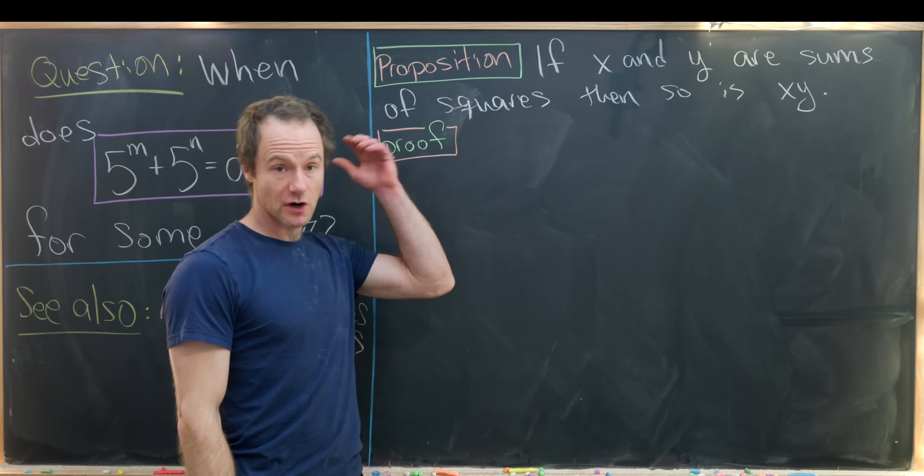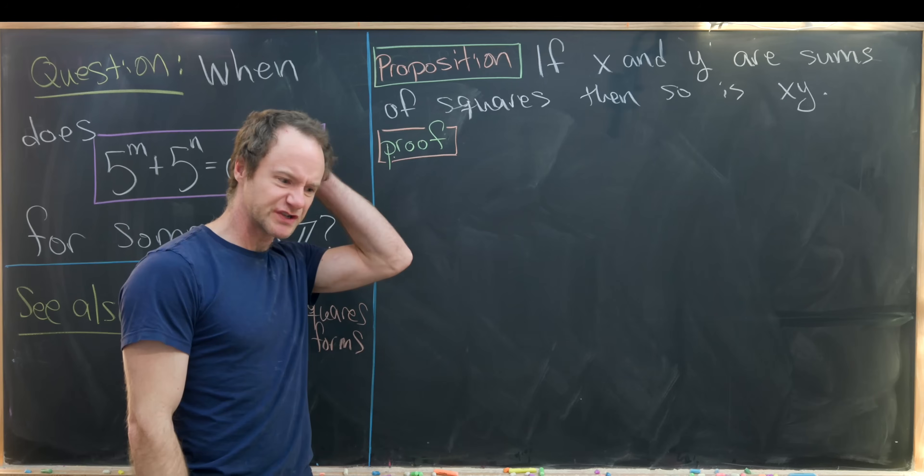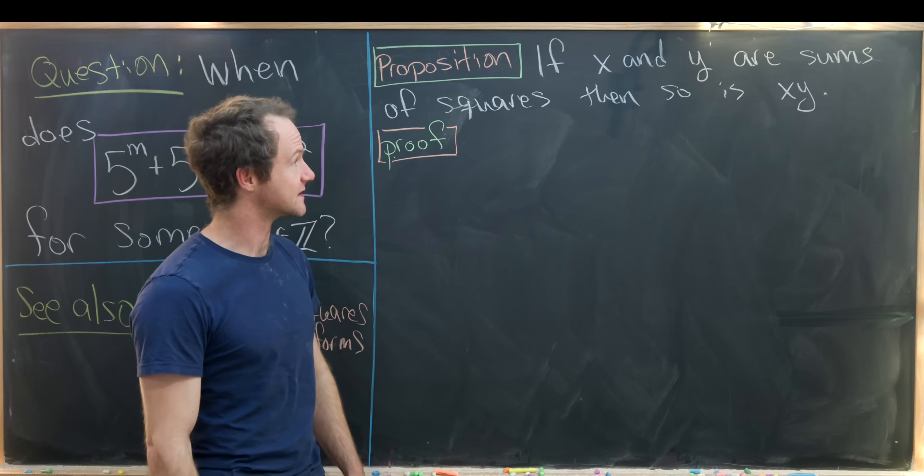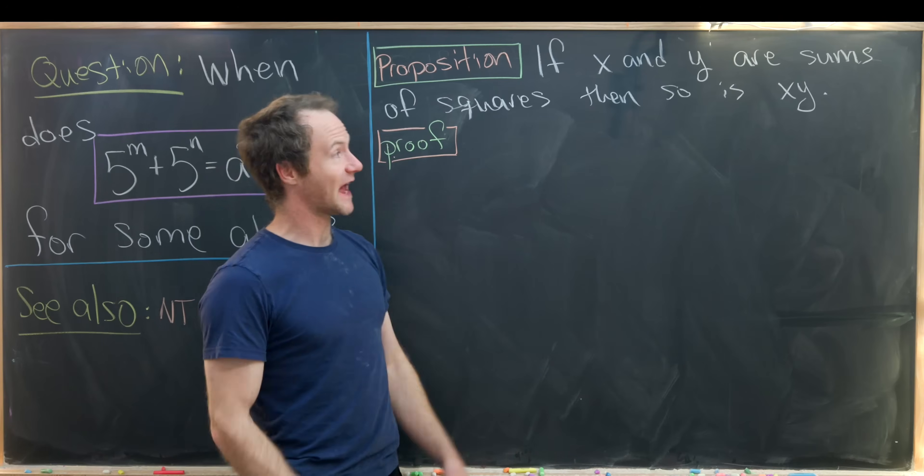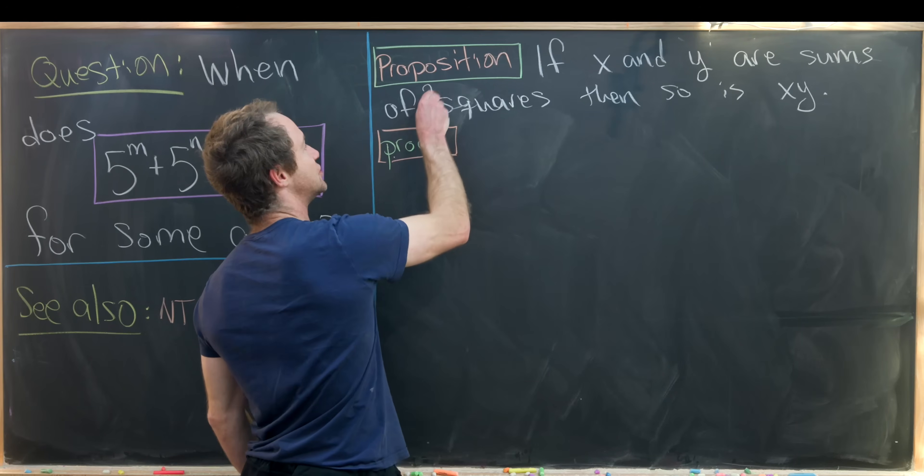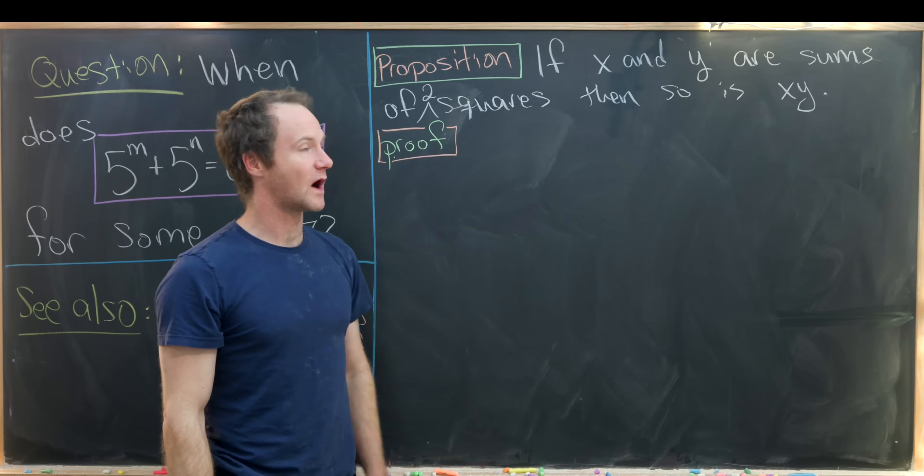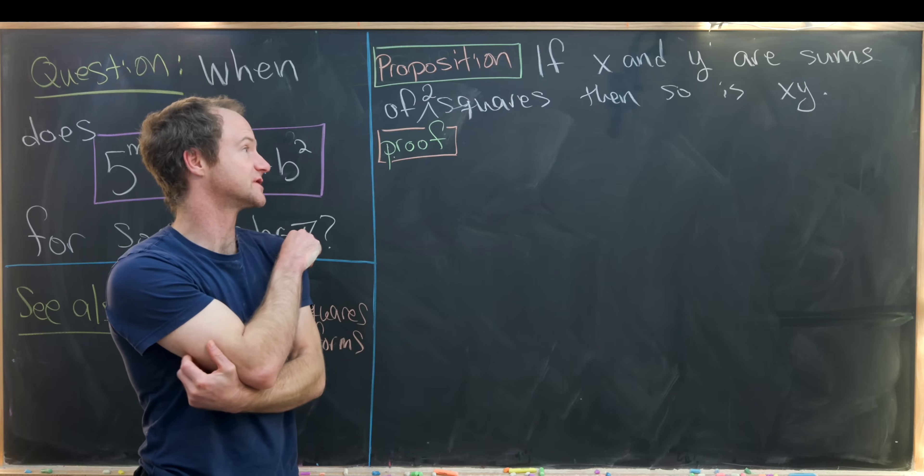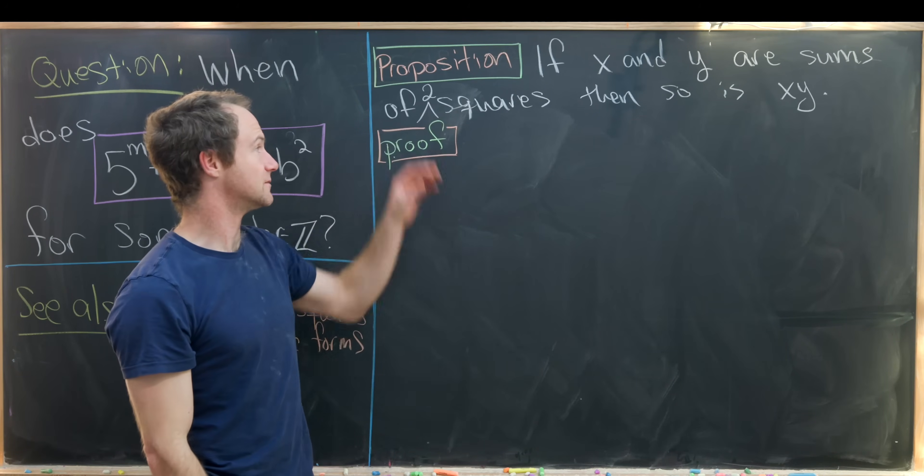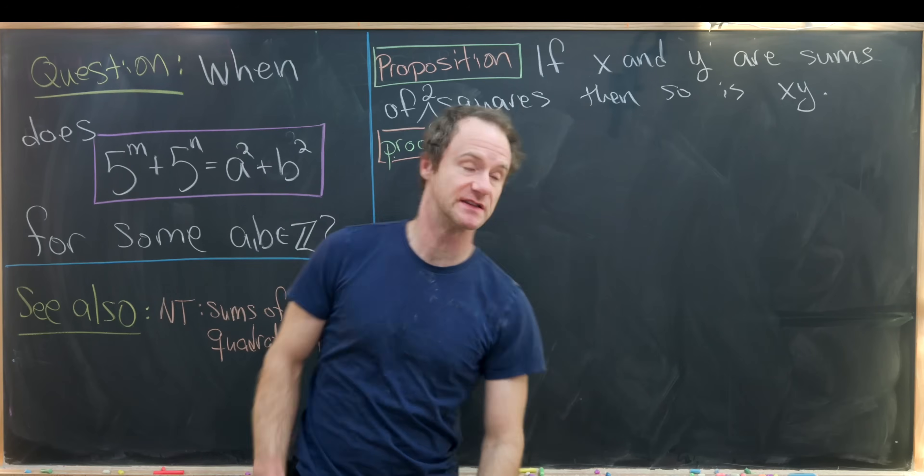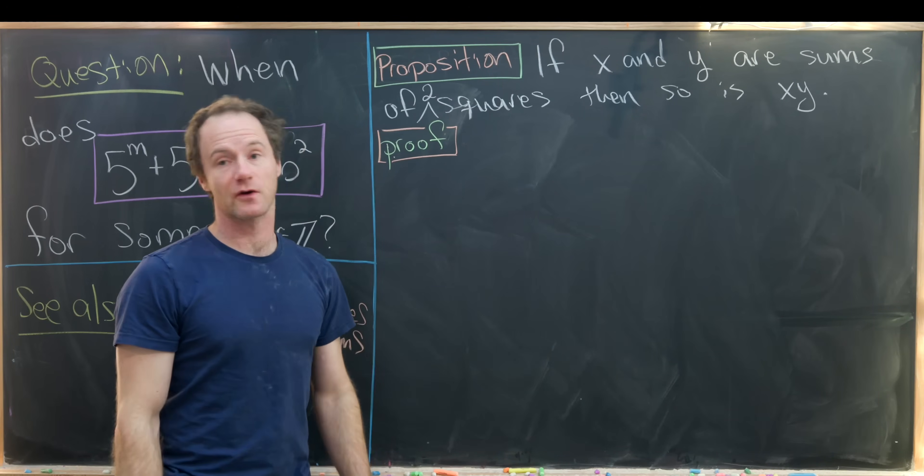Okay, so we're going to start with the following proposition which is really just a good fact to know. If x and y are sums of two squares, which are integers, and they're both expressed in this form, then so can their product.